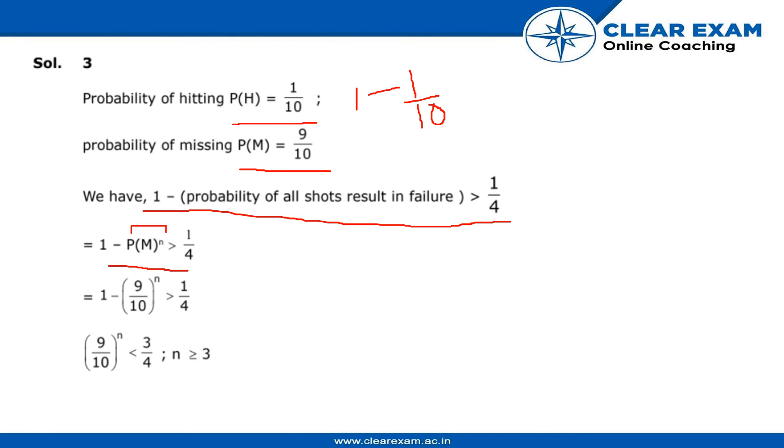By applying probability of missing to be 9 by 10 from above, we are getting that n is greater than or equal to 3. So, the least number of shots is 3.